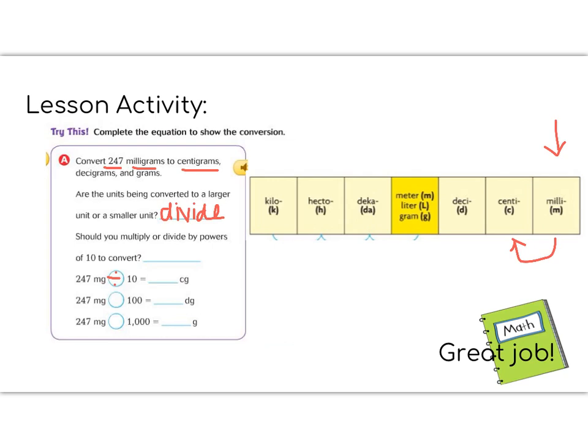So we have 247 divided by 10. Remember that when we divide by 10, our decimal moves, because our number is getting smaller, so our decimal moves to the left. So now our answer should be 24.7 centigrams.